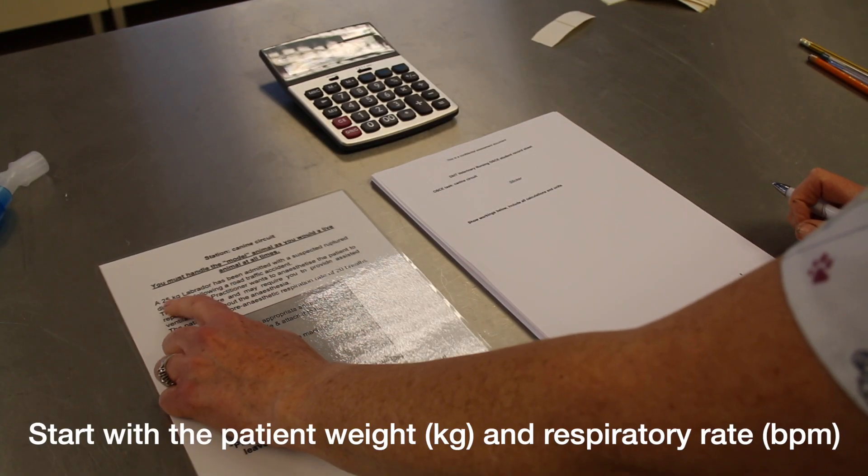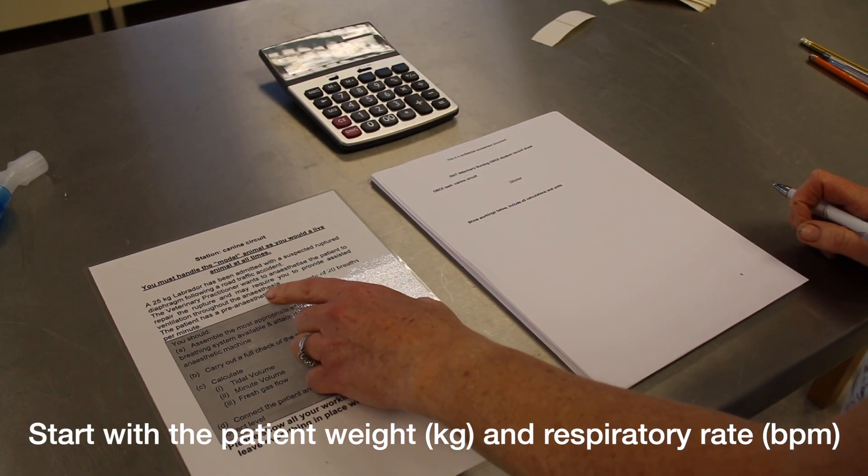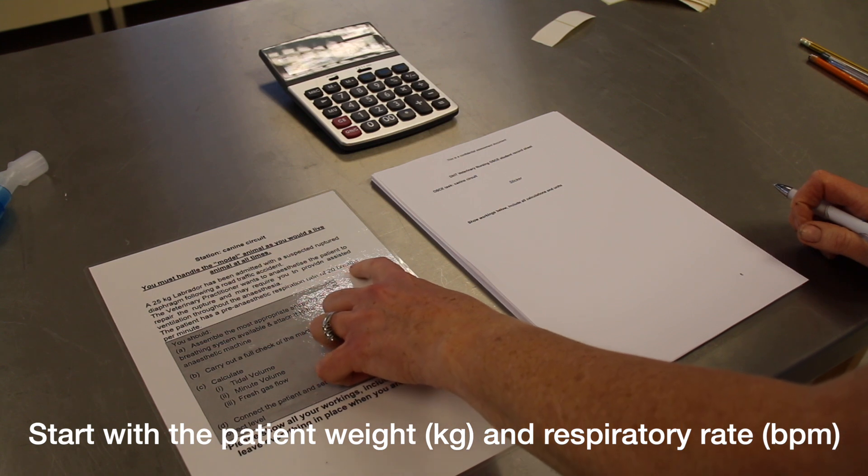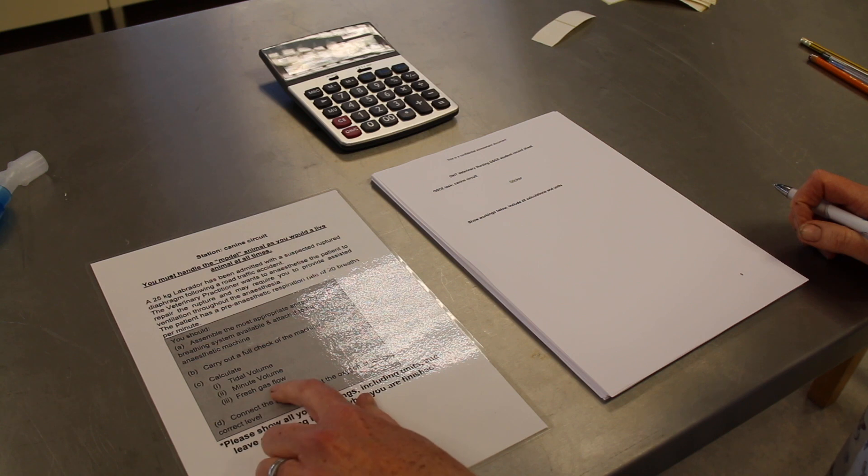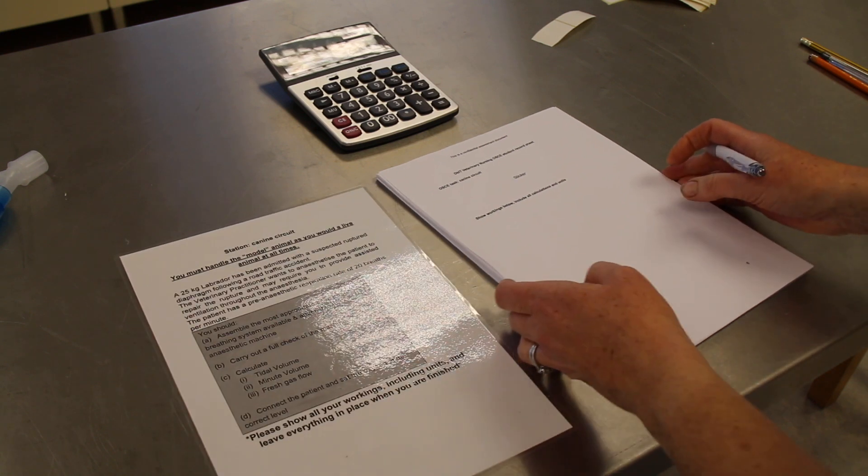Today we have a 25 kilogram Labrador with a pre-respiration rate of 20 breaths per minute. We're going to calculate tidal volume, minute volume, and fresh gas flow.